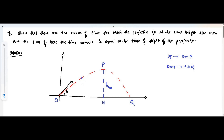At any particular time instant, the projectile is at a height h1 at time t1. It went on achieving the peak height and then came back to the same level — the same height h1 above the ground. So during its upward journey it was at this point, and again during the downward journey it came to the same level.